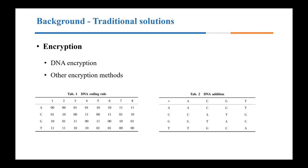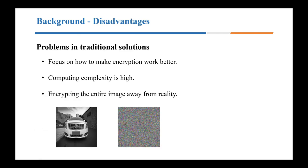These two pictures show the DNA coding rule and the DNA addition. However, the above traditional image privacy protection methods have some defects. First, they focus on how to make encryption work better, but in real situations, potential attackers are often ordinary people with no professional skills, not hackers. Second, their computing complexity is high. Take chaotic mapping as an example: it needs to go through several rounds of calculation to reach the chaotic state.